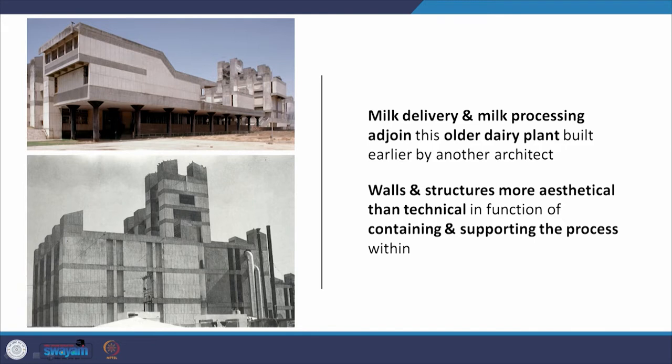Milk delivery and milk processing adjoin an already existing old dairy plant built earlier by another architect. The walls and structures used here are more aesthetic than technical in the function of containing and supporting the process taking place within. This project is interesting in what an architect can do with a very technical brief — milk processing — and generate a building that is iconic and a reflection of the kind of work being done by Indian architects. This building also shows the change in architectural direction of A.P. Kanwinde.